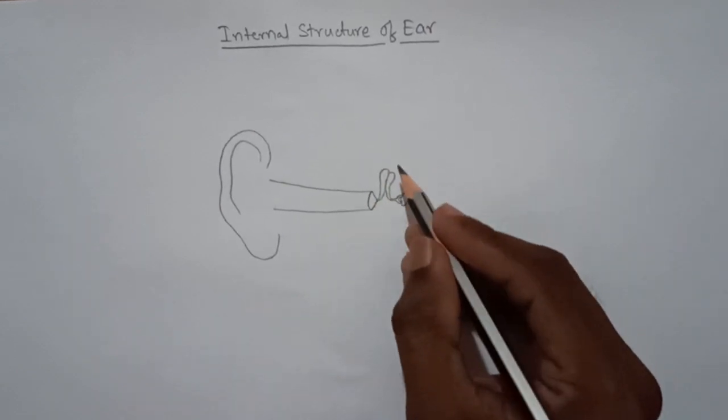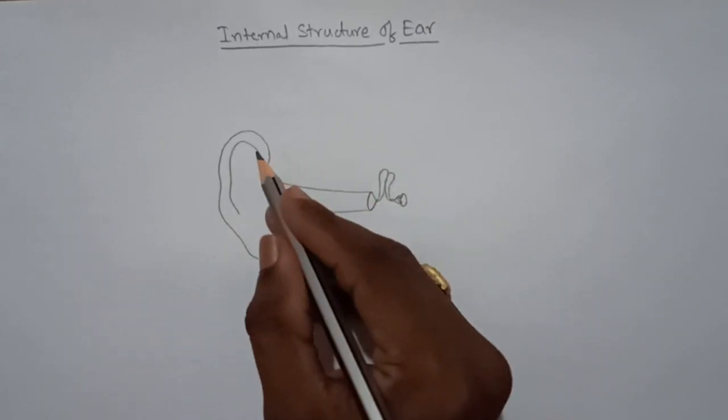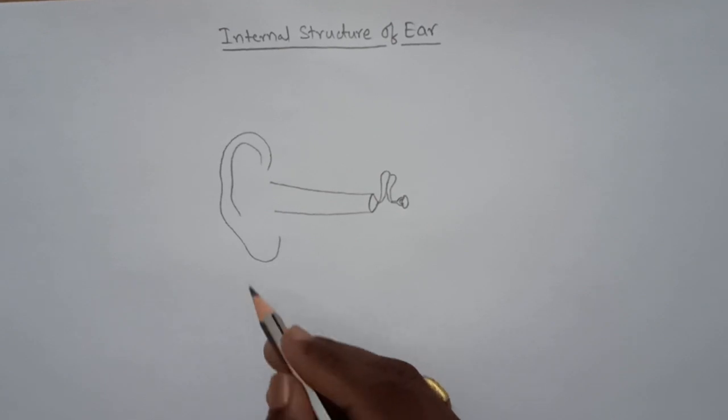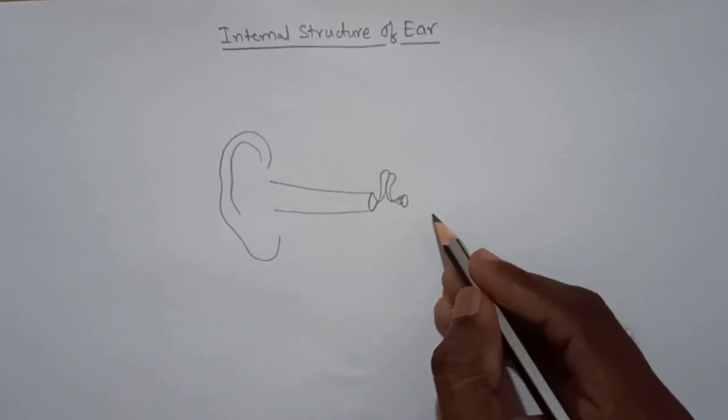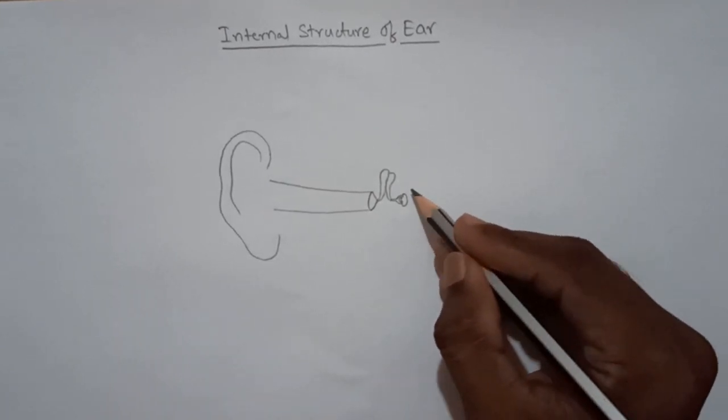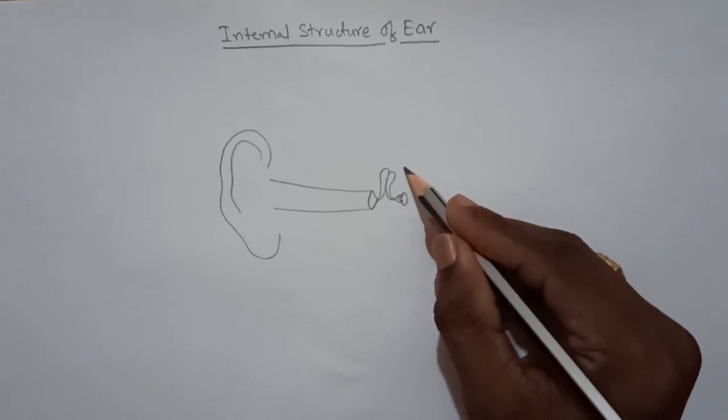So this one is the middle ear. Up to here it is the external ear. And now we are moving to the internal ear. Here we have to draw...